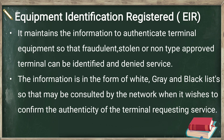The Equipment Identification Register, EIR, maintains information to authenticate terminal equipment so that fraudulent, stolen, or non-type-approved terminals can be identified and denied service. The information is in the form of white, grey, and blacklists so that the network can confirm the authenticity of a terminal requesting service. Numbers blocked per government norms are blacklisted, and terminals attempting fraudulent access are also denied authentication and blacklisted.